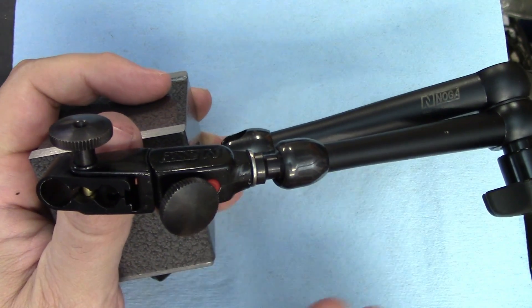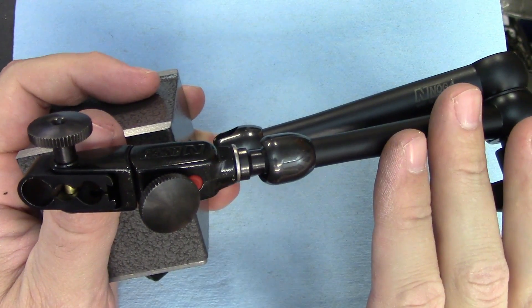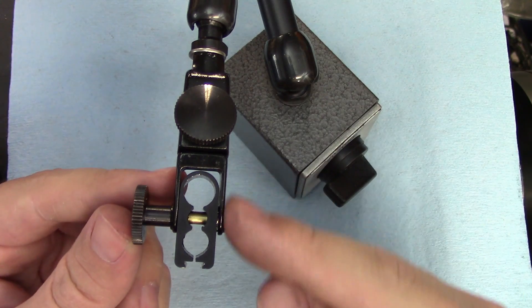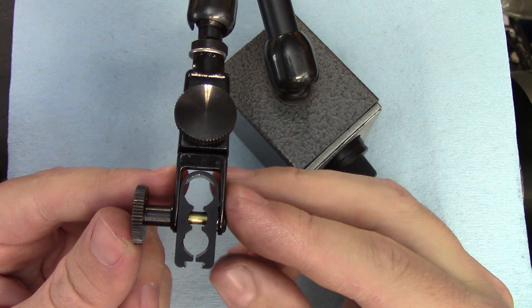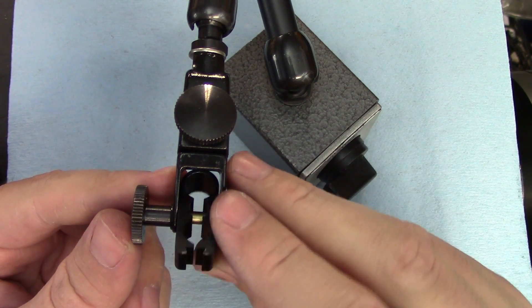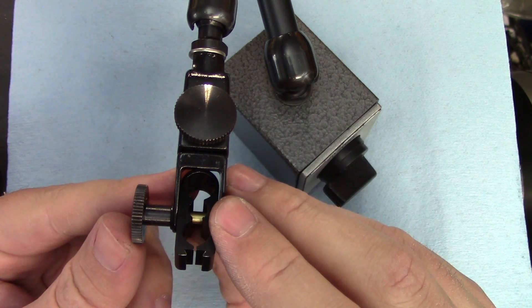I really prefer the clamping setup on my Noga indicator base. These have a flexure style clamp down at the end that has a couple of different holes for different size indicator shanks as well as a dovetail. We'll get back to the dovetail in a little bit.